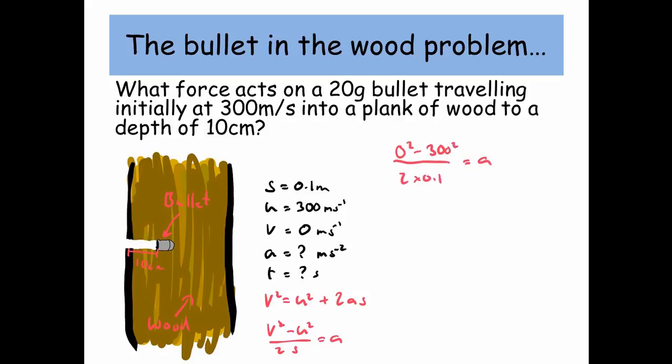Let's put the numbers in. We've got 0 squared minus 300 squared divided by 2 times 0.1. We find that our acceleration is minus 450,000 meters per second per second.